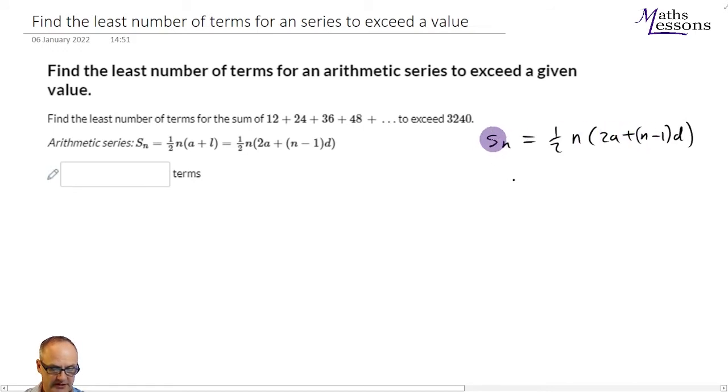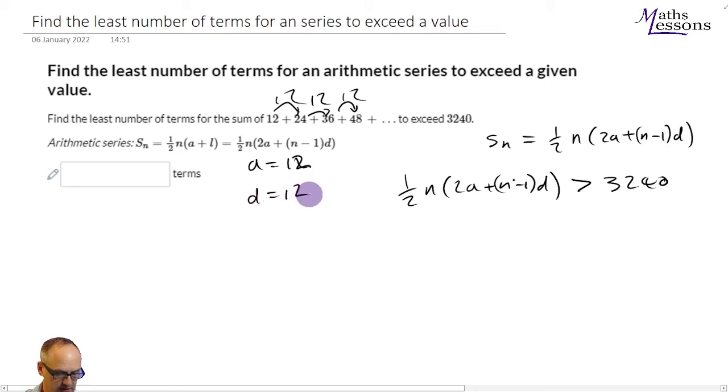Now we want to know when this is greater than 3,240. So we're going to have a half n times 2a plus n minus 1d is got to be greater than 3,240. Let's put in the values we know. We know a is 12 because the first term is 12. We know that it goes up by 12 each time. So therefore the common difference is also 12 in this case.